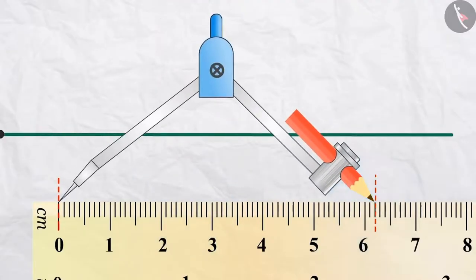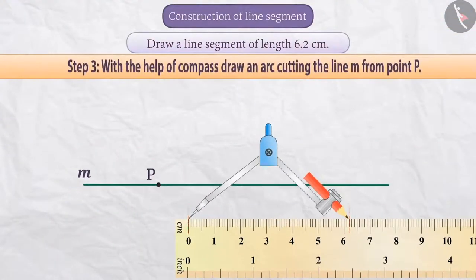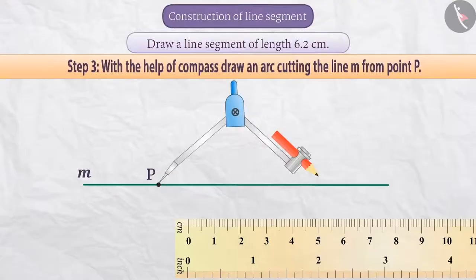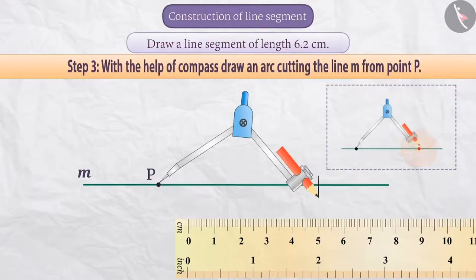Step 3: Now we will place the pointed end of the compass on point P and make an arc cutting the line M. Keep in mind that the distance taken in the compass should not change under any circumstances. Otherwise, the construction will be wrong.